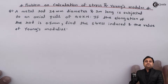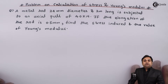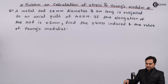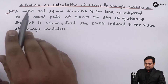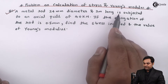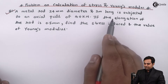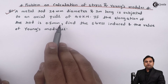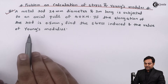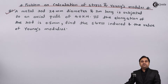Hello friends, in this video we are going to see a problem on calculation of stress and Young's modulus. A metal rod 24 mm in diameter and 2 meters long is subjected to an axial pull of 40 kilo Newton. If the elongation of the rod is 0.5 mm, find the stress induced and the value of Young's modulus.